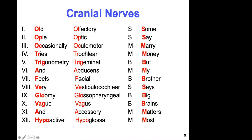Cranial nerve seven — the facial nerve — deals with facial expression: smiling, frowning, raising eyebrows, kissing, puffing up your cheeks. It also controls the sense of sweet, sour, and salty on the tongue. Seven — sweet, sour, salty. It also deals with salivation and lacrimation — the salivary glands and part of the tear duct.